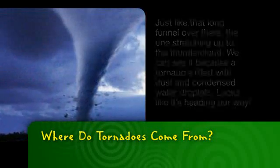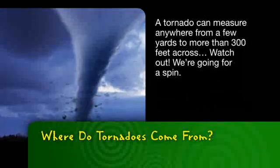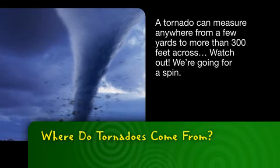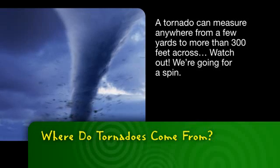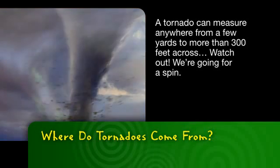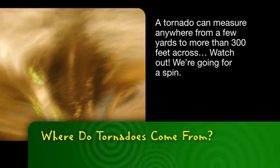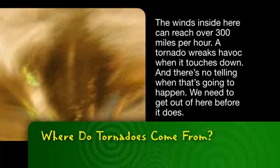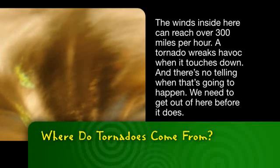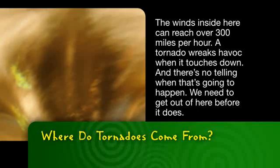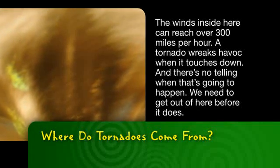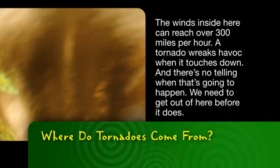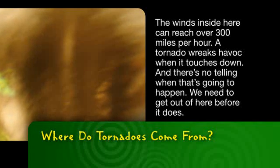Looks like it's heading our way. A tornado can measure anywhere from a few yards to more than 300 feet across. Watch out! We're going for a spin! The winds inside here can reach over 300 miles per hour. A tornado wreaks havoc when it touches down, and there's no telling when that's going to happen.